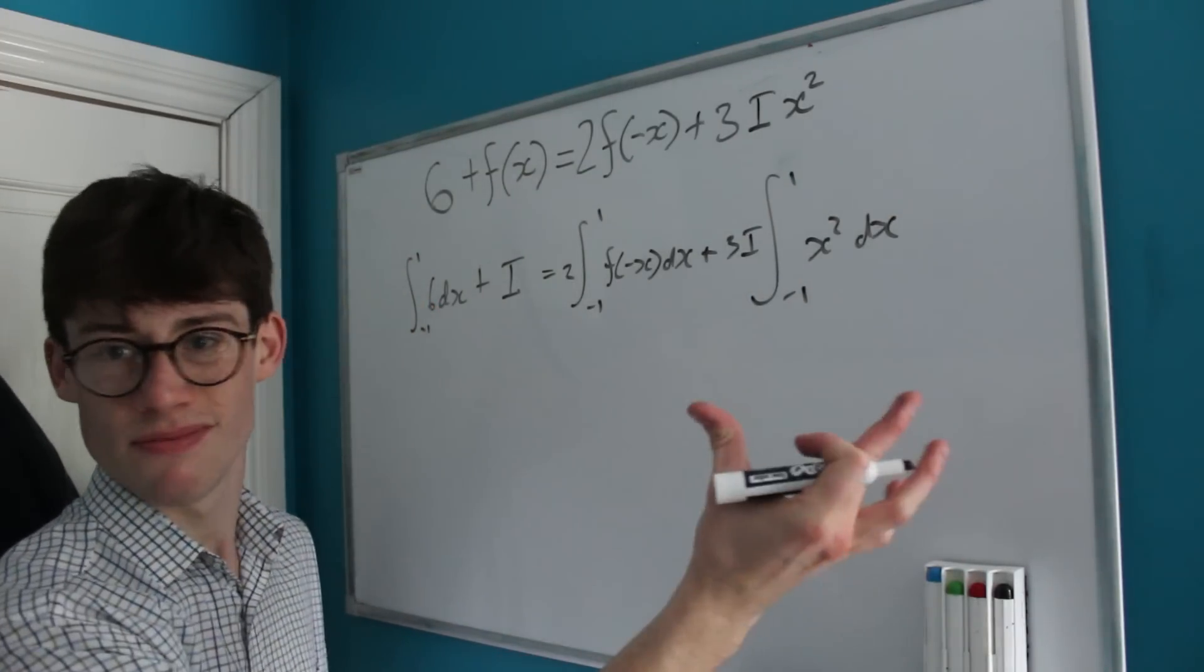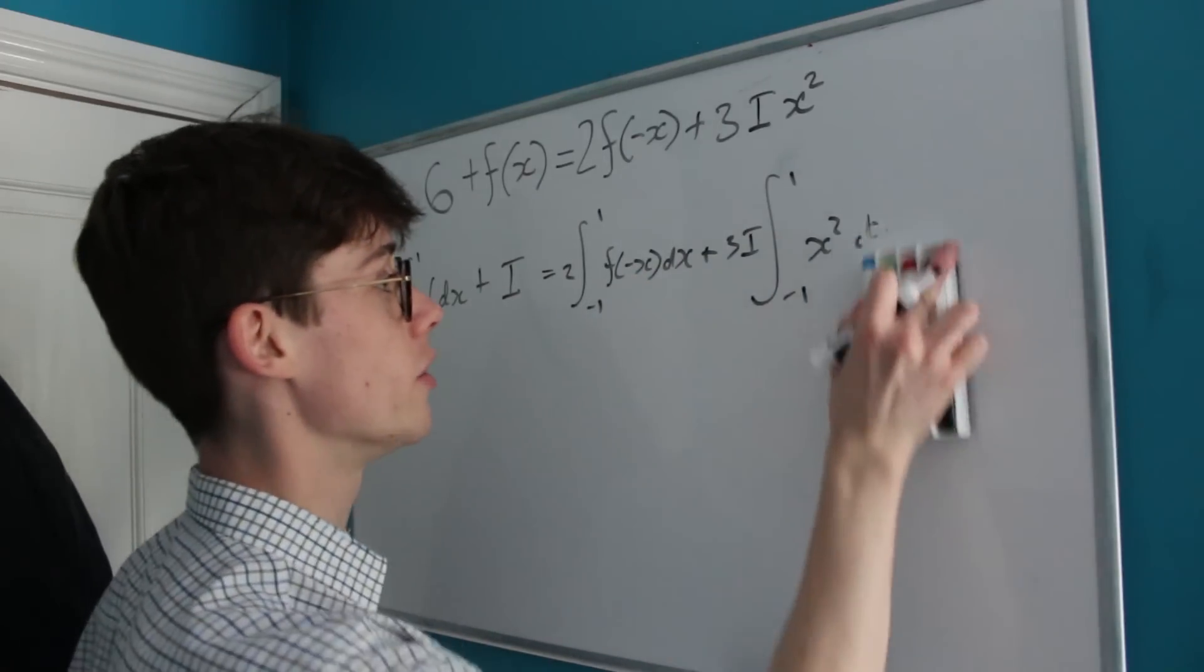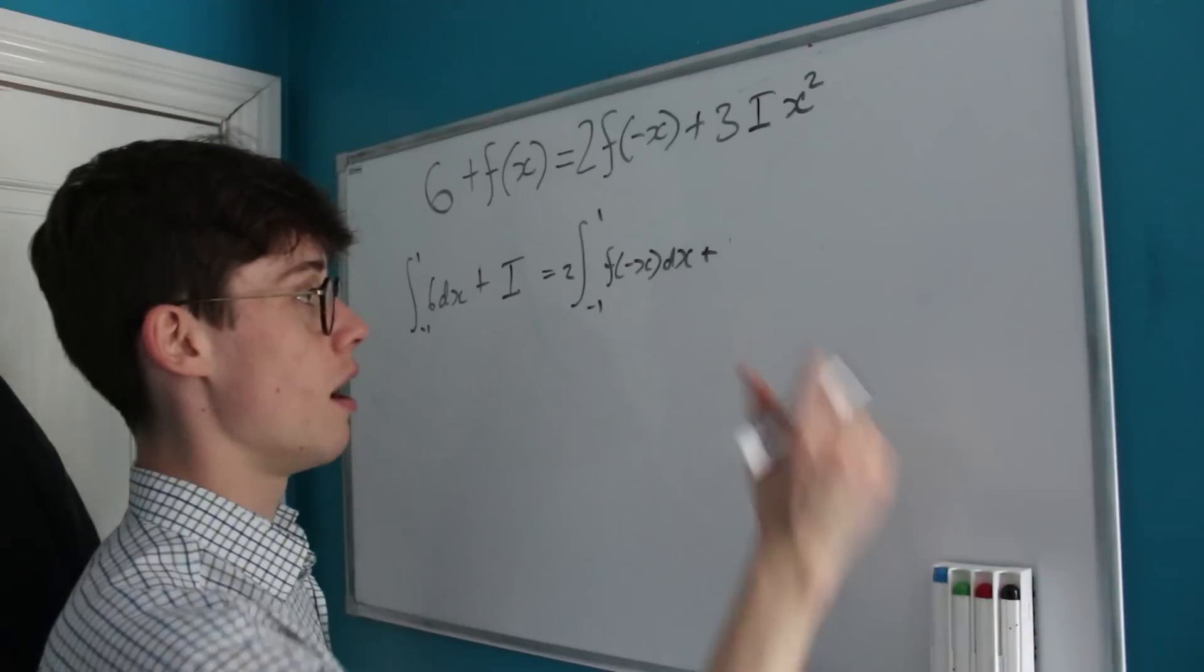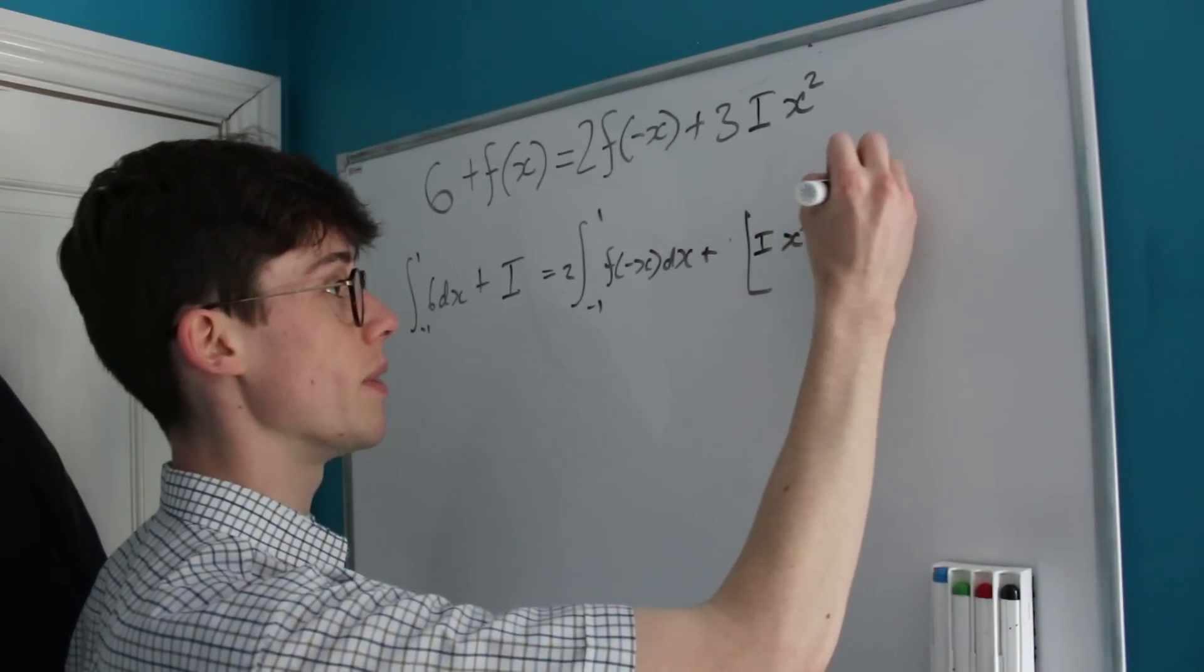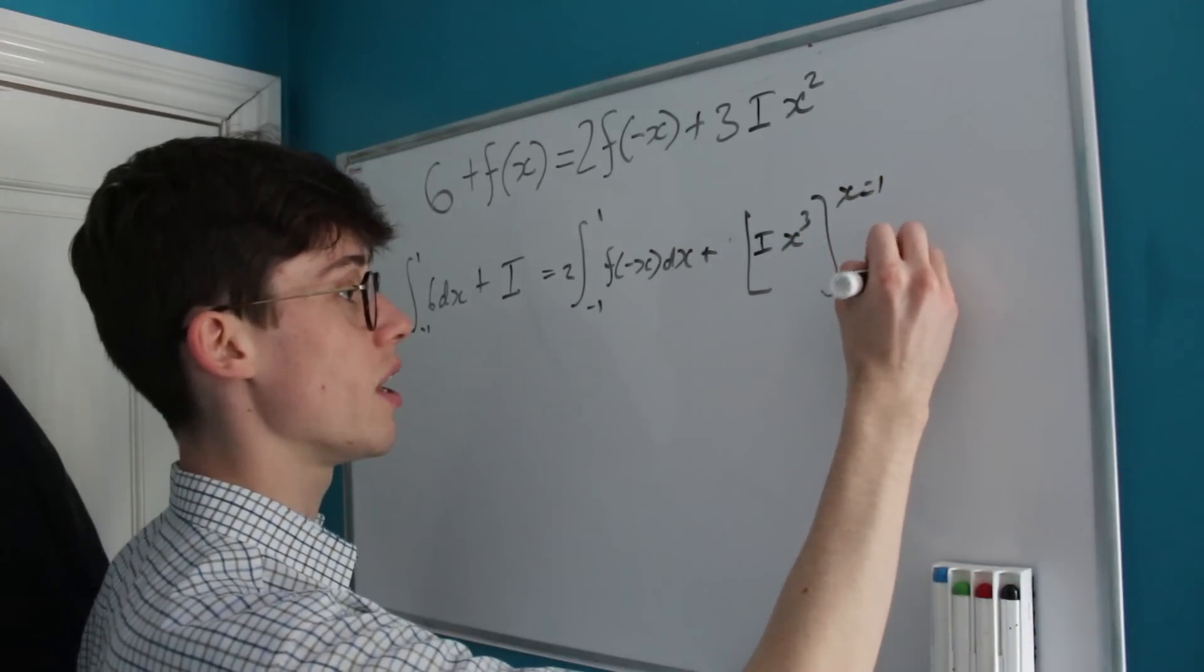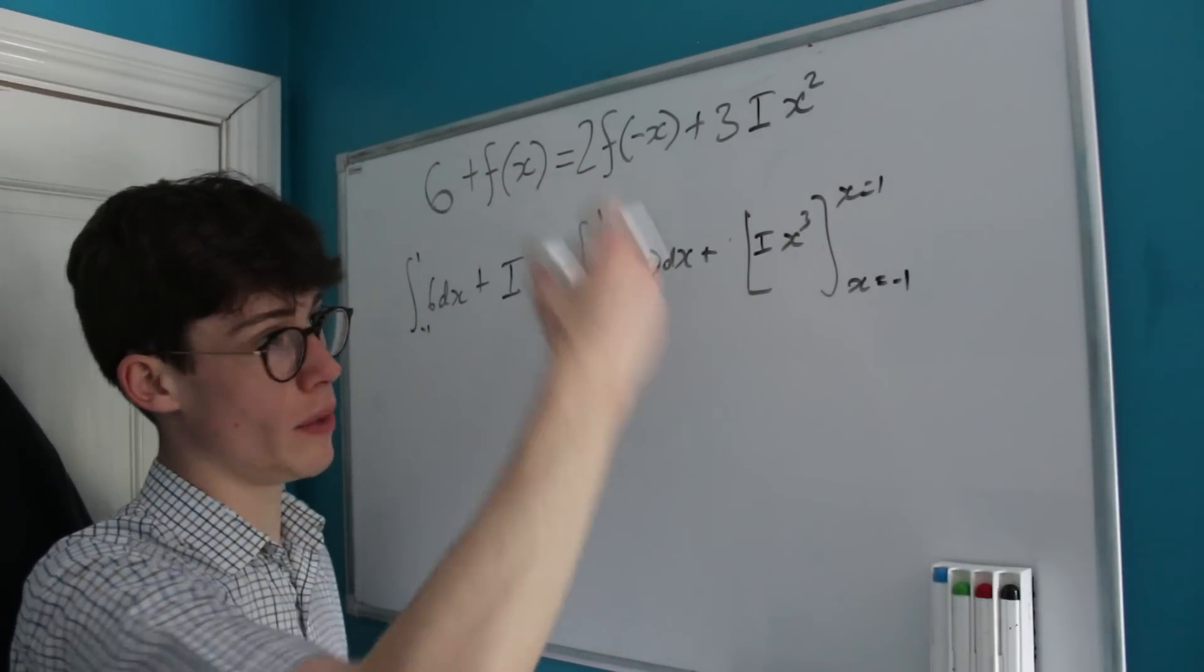This part is very simple: add 1 to the power, divide by the new power. So we're going to be looking at I times x³ evaluated between the bounds of 1 and -1. That's going to be 1 minus (-1), so we're going to have 2I over here.